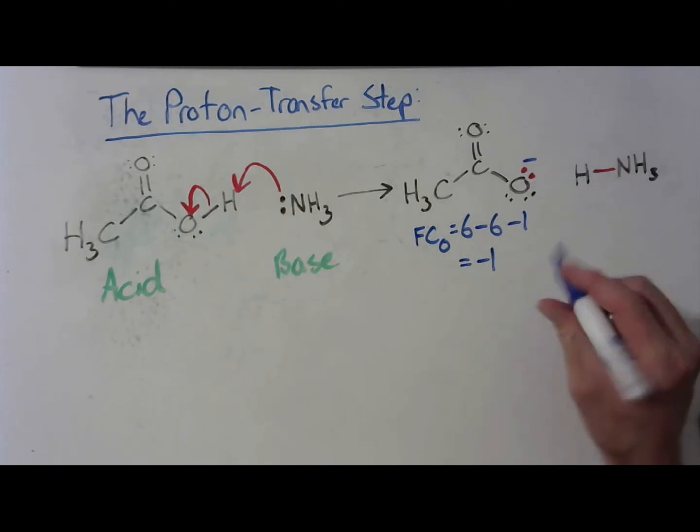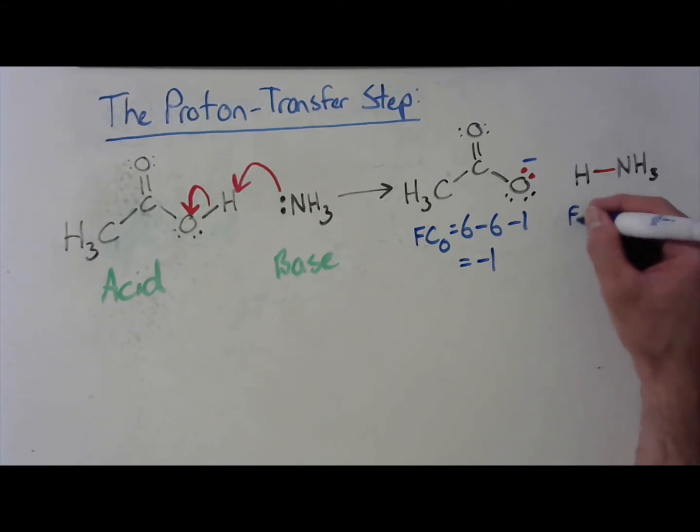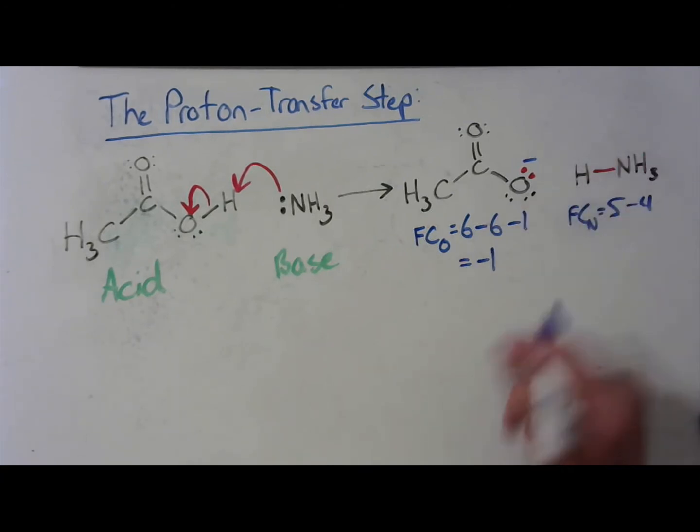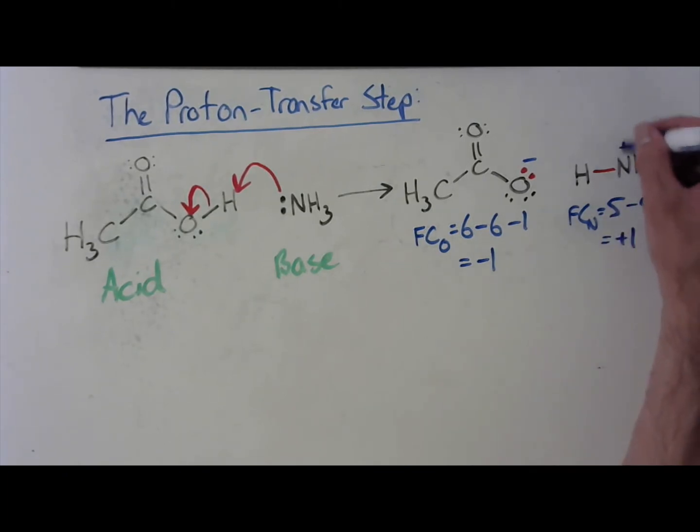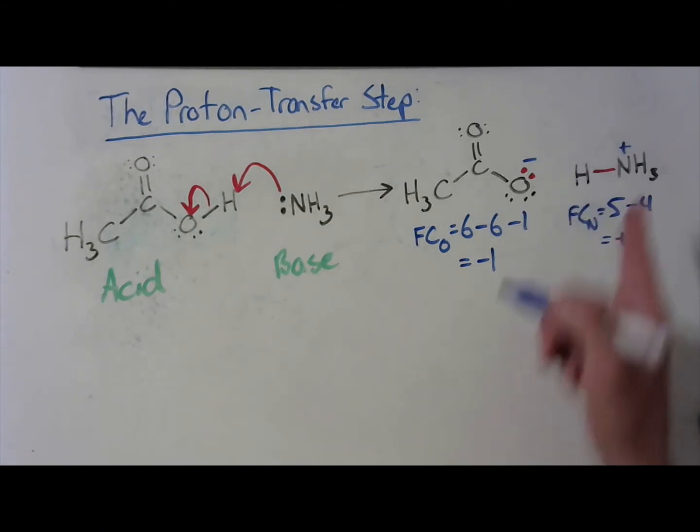The nitrogen, same thing. We need to do the same thing for the nitrogen. So we start off the same way. Nitrogen has a valence number of 5. We have 4 covalent bonds. And no lone pair electrons. So we have a formal charge of plus 1. So we add that to our nitrogen.